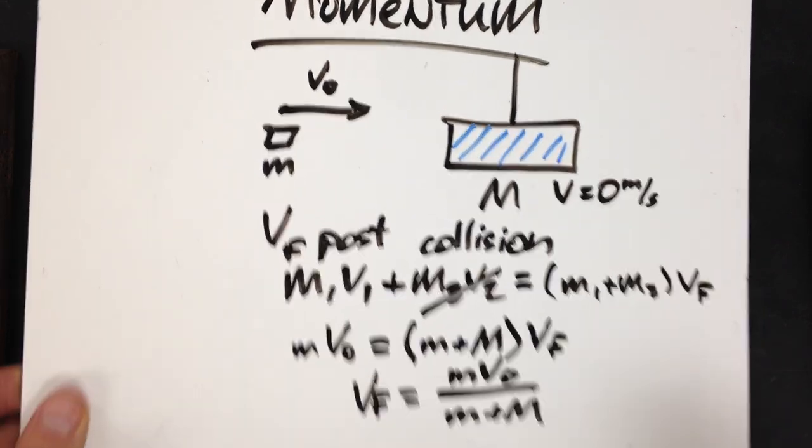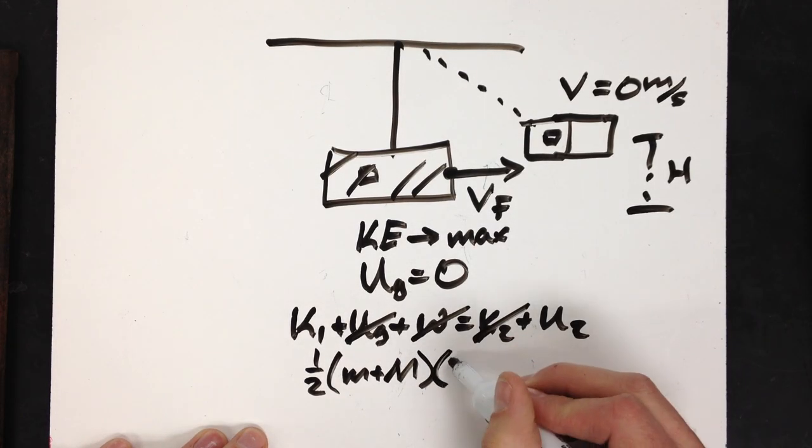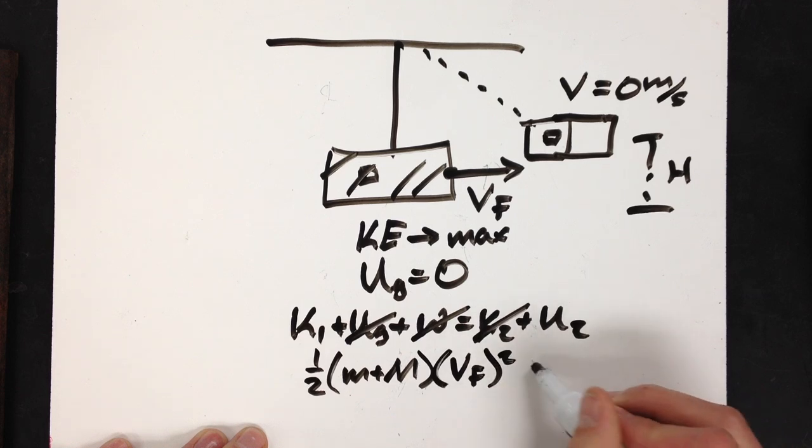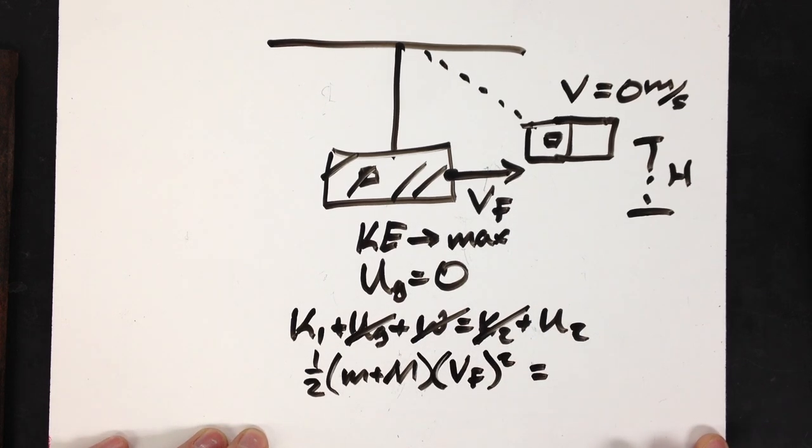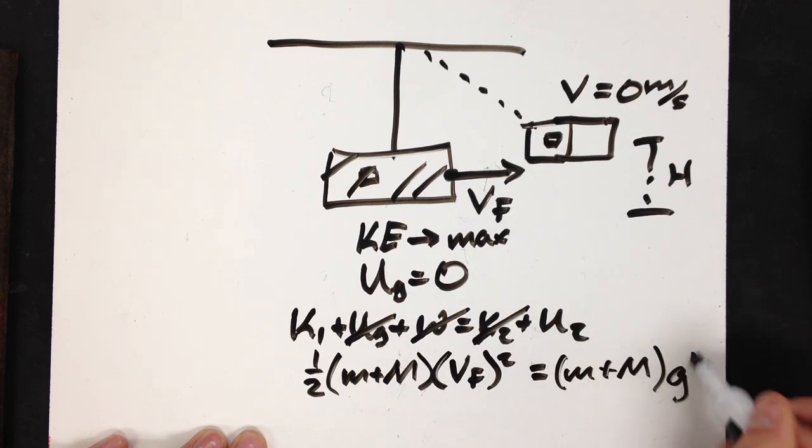mv0 divided by m plus M. Now, it's one half mv squared. Well, let's plug in v final for right now, and then we'll substitute in that variable here in just a second. Equals my mass, which is m plus Mgh.